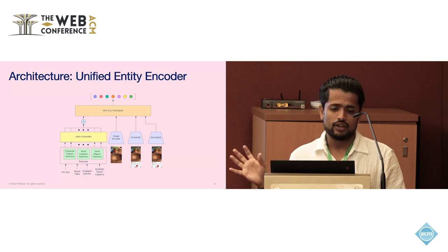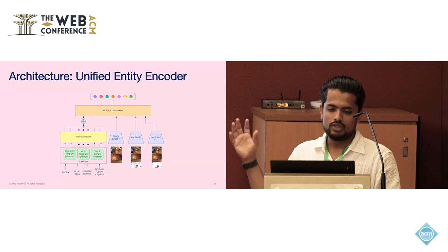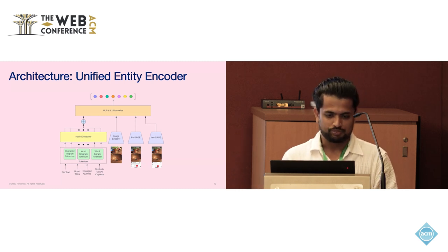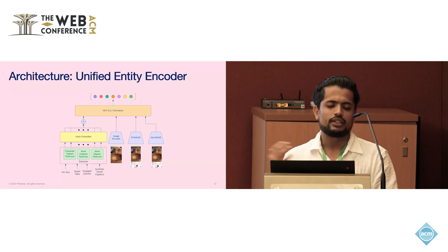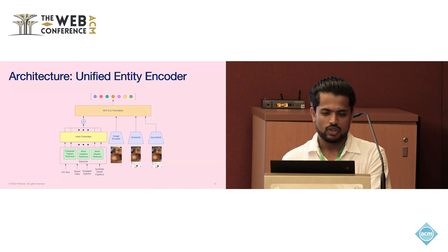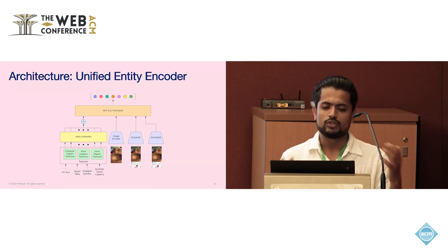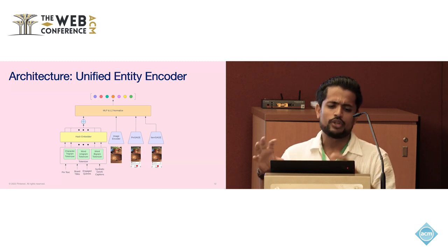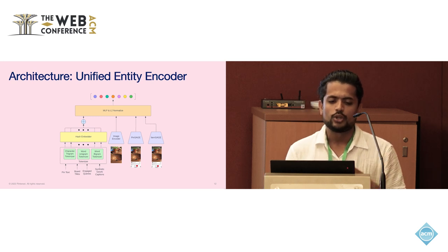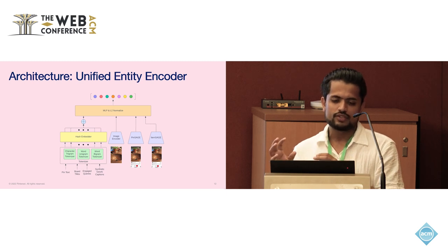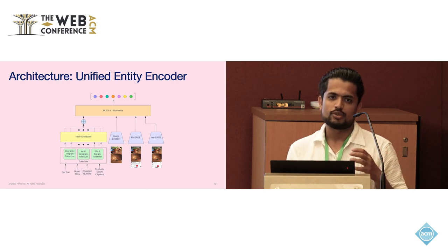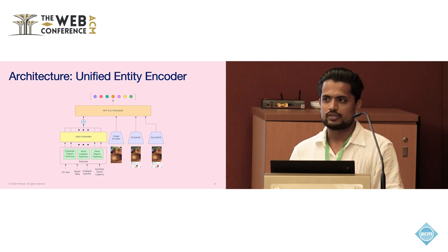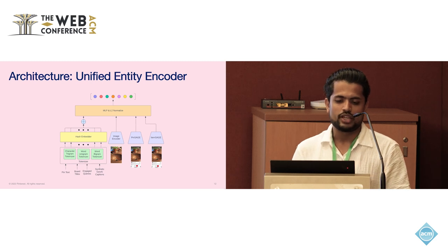Our entity encoder is multimodal, consuming both images and associated text with pins and products. For images, we use our in-house image embedding model and other existing entity embedding features. For text features, we use a bag-of-words approach — a combination of unigram and bigram tokenizers to tokenize the text, which is then embedded into a low dimension using a hash embedding bag. This gives a good trade-off between representation power and training batch size, since for contrastive learning we want as large a batch size as possible to have good in-batch negatives. Scaling to a transformer would reduce batch size significantly without much performance benefit.